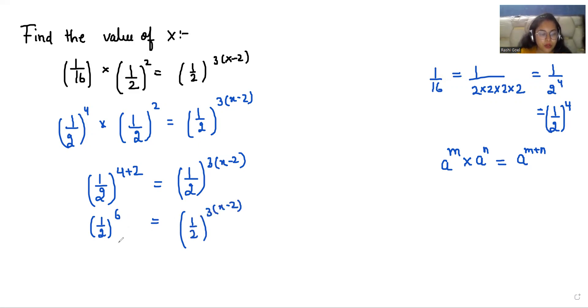We know the rule: if bases are equal, their powers are also equal. So we can write 6 = 3(x-2). Now I'm going to divide by 3.